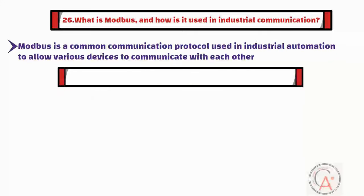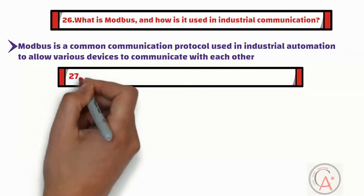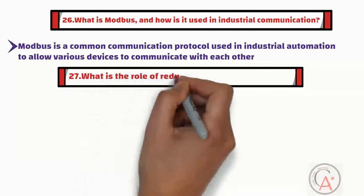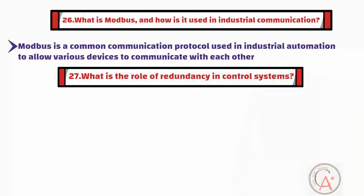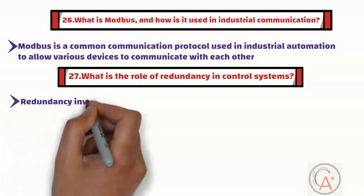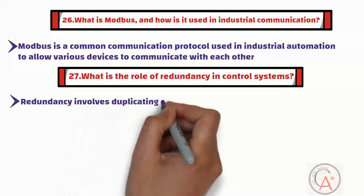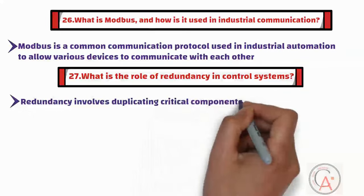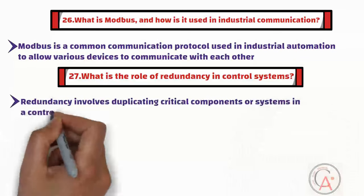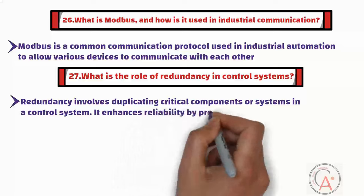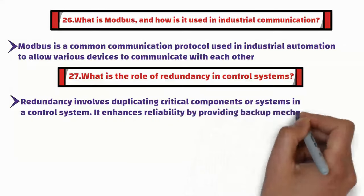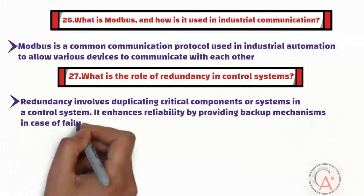The twenty-seventh question is: what is the role of redundancy in control systems and how does it improve reliability? Redundancy involves duplicating critical components or systems in a control system. It enhances reliability by providing backup mechanisms in case of failures.